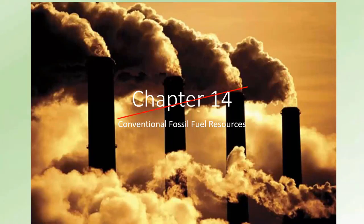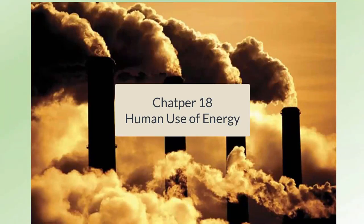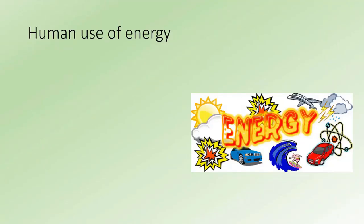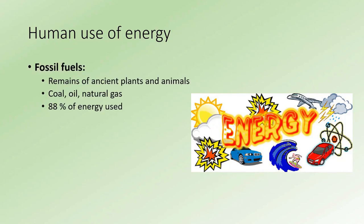All right folks, this is Chapter 14. In this chapter we're talking all about conventional fossil fuel resources. Let's talk about humans and our use of energy. Fossil fuels are the remains of ancient plants and animals and include coal, oil, and natural gas. These are three traditional fossil fuel resources. Worldwide, this still accounts for about 88% of the energy that we use.